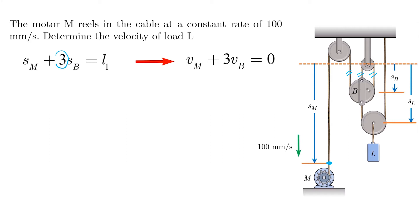And for the other side, we have this small segment, which is SL minus SB, and the other long segment, which is SL. And this is equal to the second length L2. And if we take the derivative, it will be 2VL minus VB equals to zero.